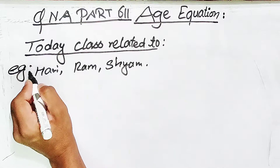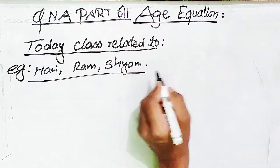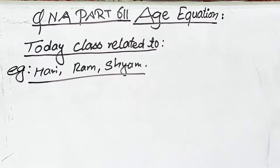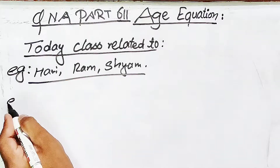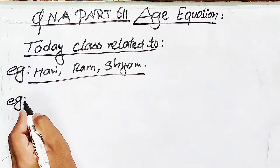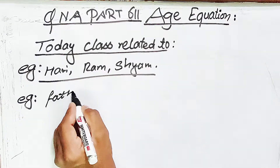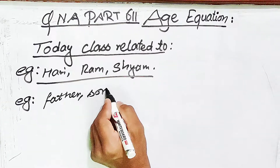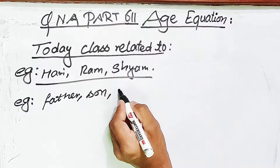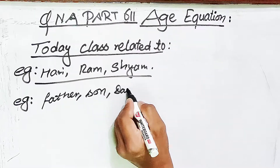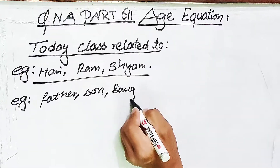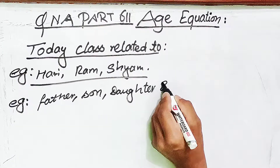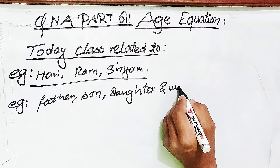We can see that three people are given to us. Father, Son, Daughter, Wife.